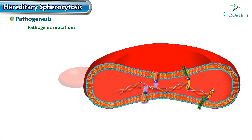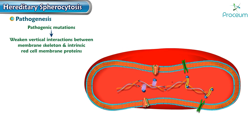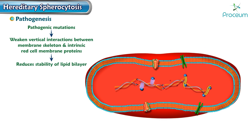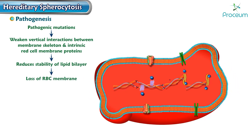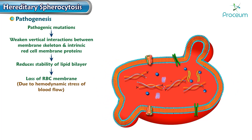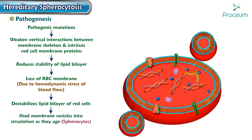These pathogenic mutations weaken the vertical interactions between the membrane skeleton and the intrinsic red blood cell membrane proteins. This reduces the stability of the lipid bilayer, resulting in loss of the RBC membrane due to hemodynamic stress of blood flow, causing destabilization of the lipid bilayer and shedding of membrane vesicles into the circulation as the cells age.